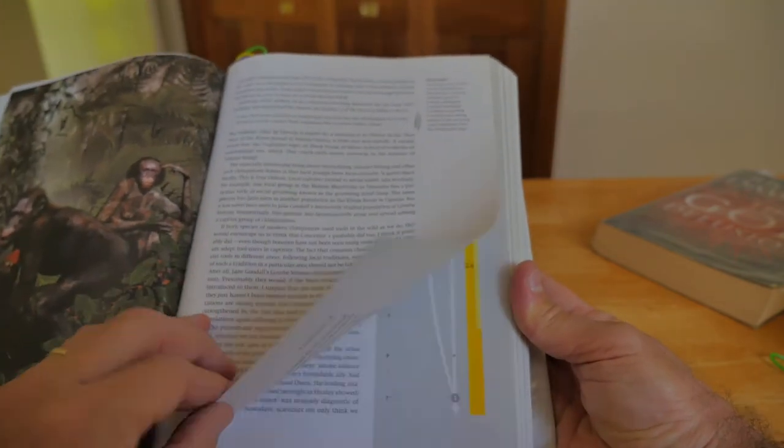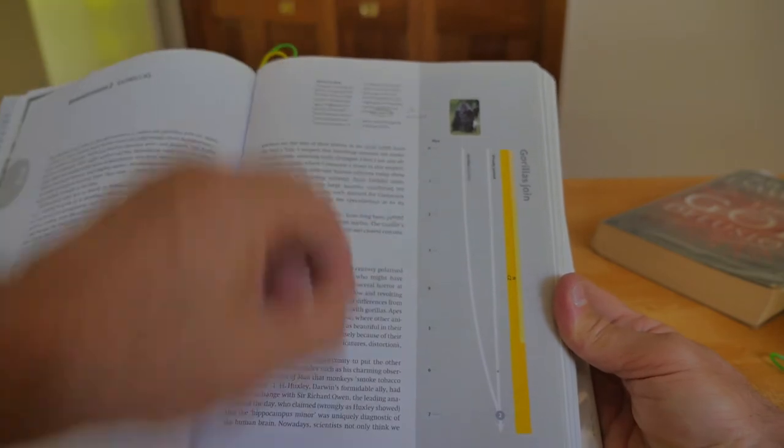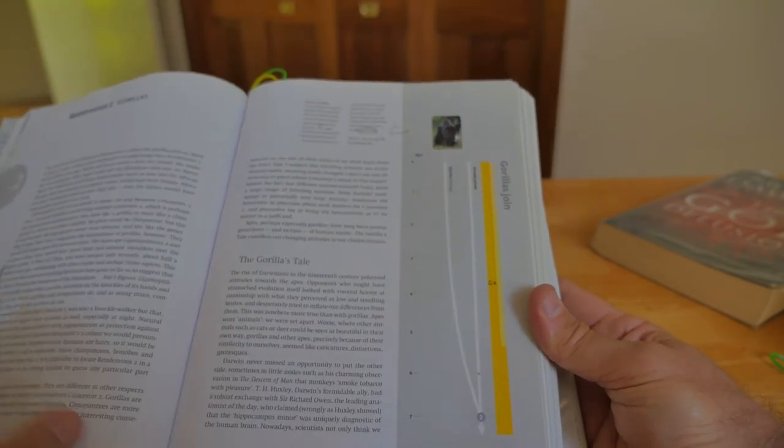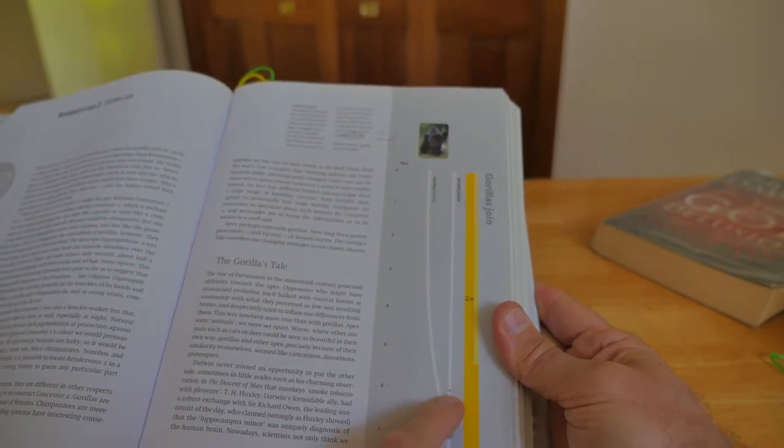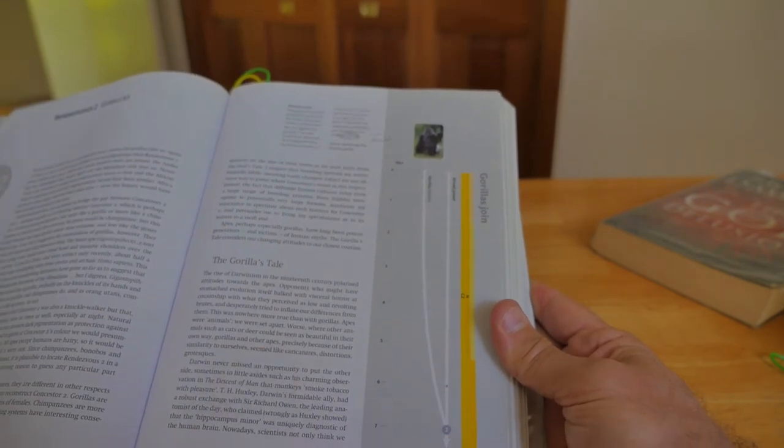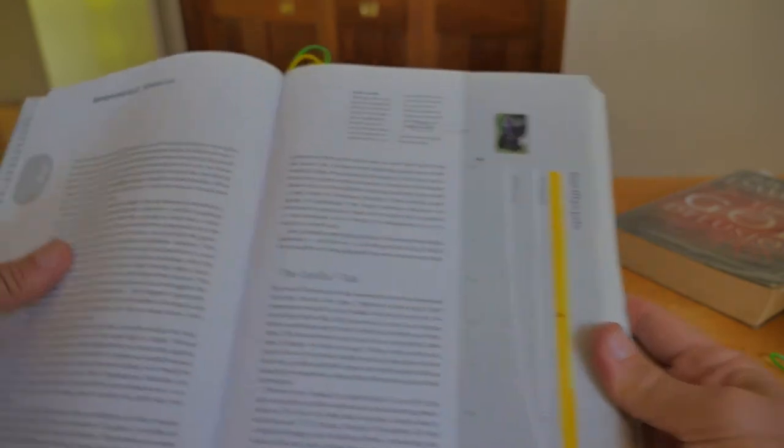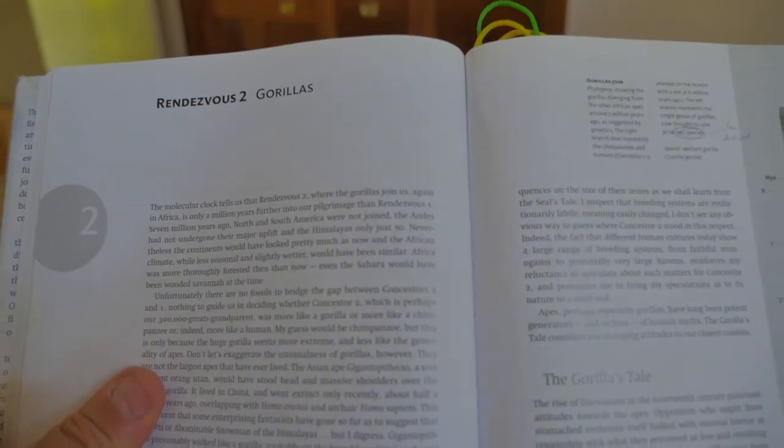We've got some nice pictures here. And then rendezvous number two with gorillas. So here we are. We meet the chimpanzees here, and we meet the gorillas about seven, probably eight or nine million years ago. But that's rendezvous number two with gorillas.